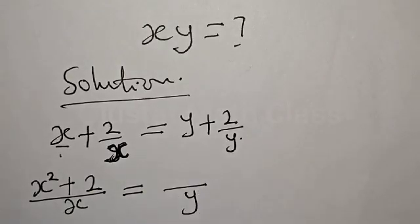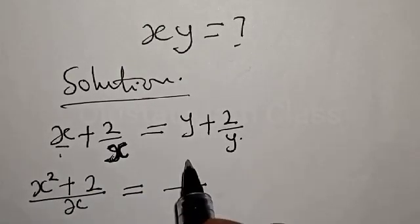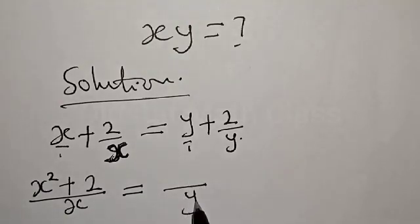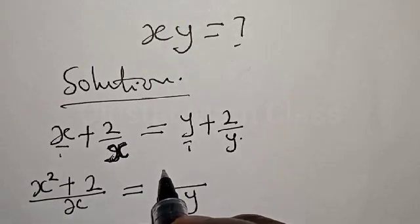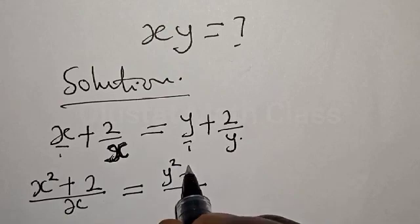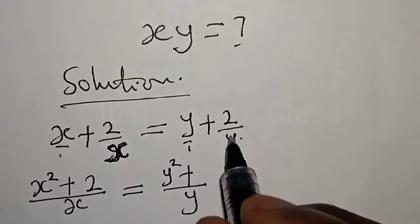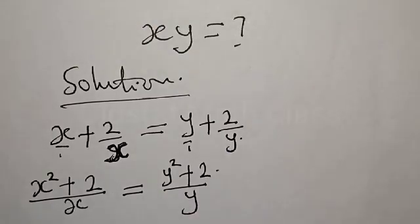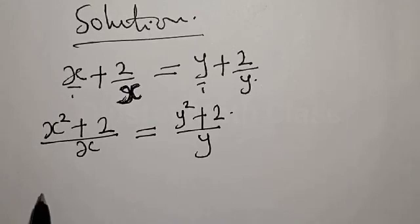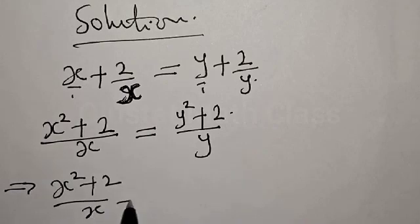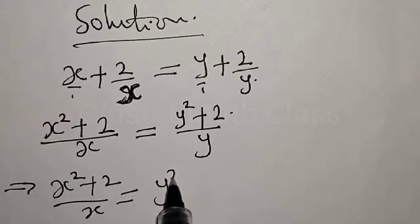On the right hand side the LCM is y, so this is the same as y over 1. We have 1 goes into y is y, y times y we have y squared, plus y goes into y is 1, 1 times 2 is 2. Therefore this implies we have x squared plus 2 over x equal to y squared plus 2 over y.